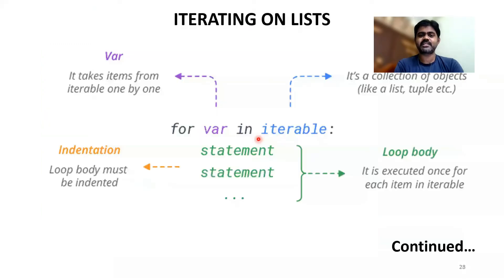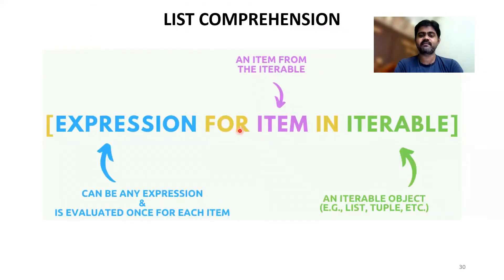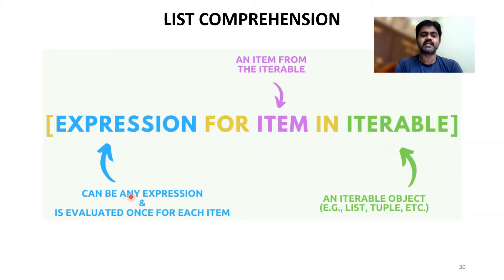So what is the iteration? For variable in iterable. What is list comprehension? For item in iterable with an expression. So if you have x and you want to perform power of x, you give that in place of the expression, for item in iterable. Here you can also add a condition. This expression is evaluated once for each item. An iterable object can be a list, a tuple, or whatever it is.